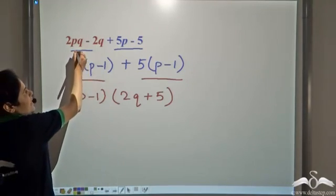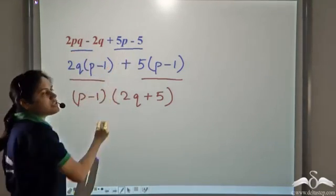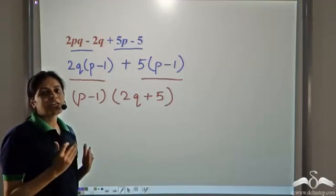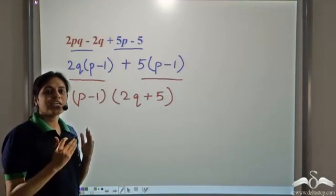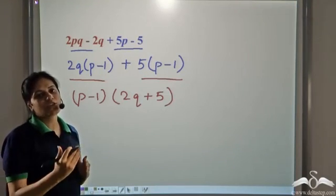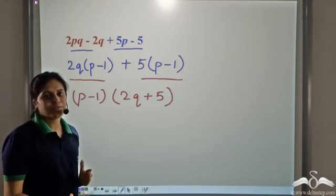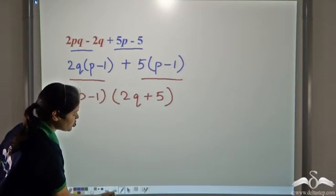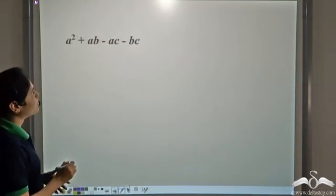So we divide the expression into groups such that each group has a common factor, and we have to do it by trial and error.